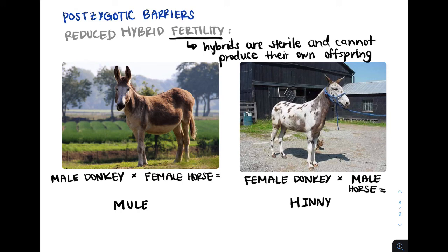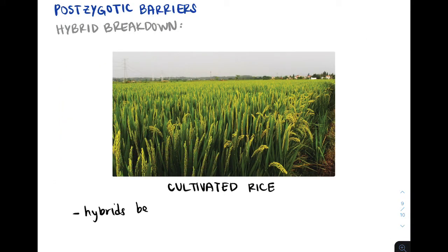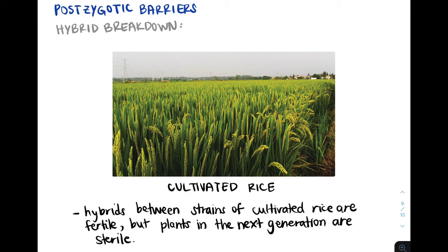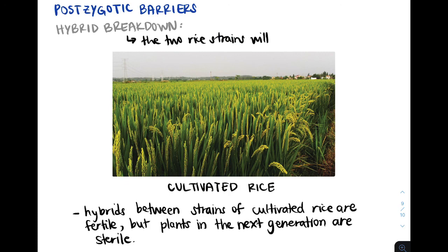Now we'll look at the final postzygotic barrier: hybrid breakdown. In this example, we have cultivated rice. Hybrids between strains of cultivated rice are fertile, but plants in the next generation are not. So when these hybrids eventually mate, the plants in the next generation are sterile. This is called hybrid breakdown because the postzygotic barrier will cause these cultivated rice strains to eventually be separated into two different species.